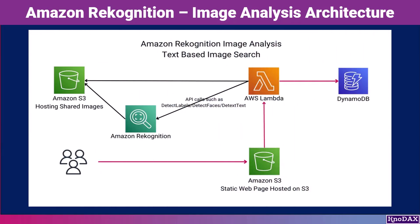This diagram shows a typical application architecture when building with Amazon Recognition. Users start by uploading or sharing images into an Amazon S3 bucket. These images are then analyzed by Amazon Recognition through API calls, such as detect labels, detect faces, or detect text. Recognition sends its analysis results back, which can trigger AWS Lambda functions for further processing.